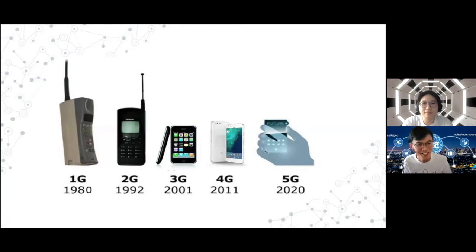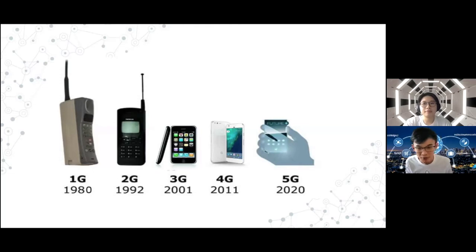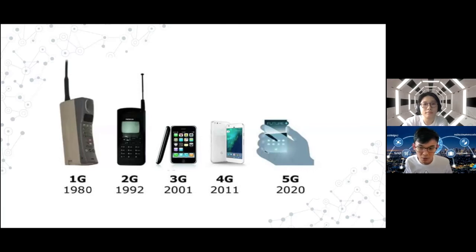Moving to 5G — with 5G you will see exponentially faster download and upload speeds. In terms of latency, the time taken for a device to communicate with a wireless network will drastically decrease. With the use of radio spectrum, it will allow more devices to access mobile internet at the same time, connecting more devices to the same network without sacrificing performance.